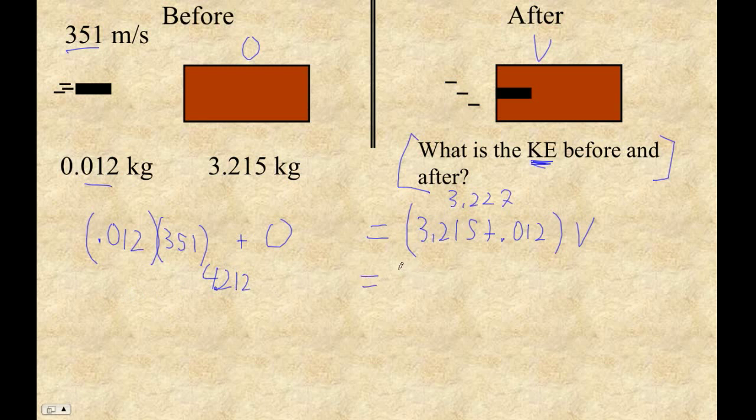That equals 3.227 times v. So that divided by 3.227, I get that this velocity is 1.305237. I'm going to store that in A just for fun. Now, that's the momentum part.